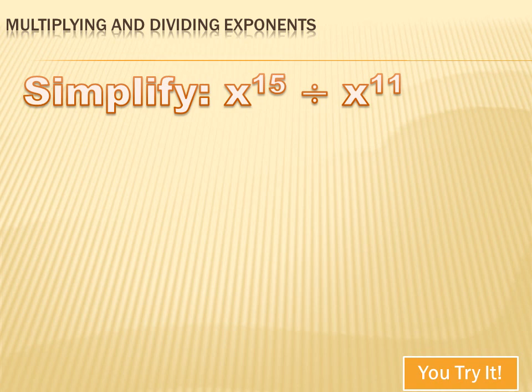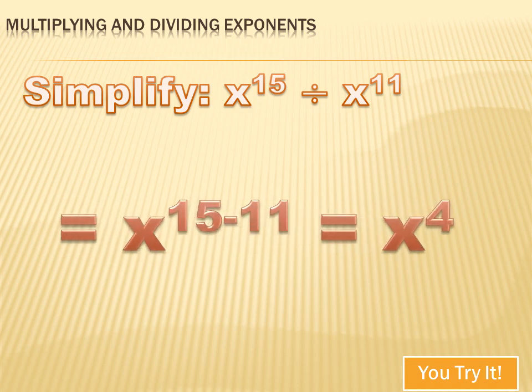I hope that one was easy for you. I've got x to the 15th divided by x to the 11th. When dividing like terms both raised to a power, all I do is subtract the exponents. So x to the 15th divided by x to the 11th equals x to the 15 minus 11, or x to the 4th.